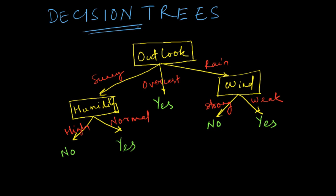Hi all. In the previous video we had learned about the supervised learning method called decision trees, where you do binary classification or multi-class classification by forming hierarchical structures called trees. The way you decide the hierarchy is by using the concept of entropy, information gain, or what is called the Gini index.